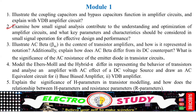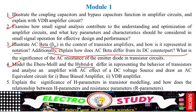Illustrate beta — what is beta AC for the transistor amplifier and how it is represented in notation. Additionally, explain how AC beta differs from its DC counterpart, and what is the significance of AC resistance of the emitter diode in the transistor circuit. This is a lengthy question; you can expect it part by part. Model the Ebers-Moll and hybrid pi models representing the behavior of transistors, and analyze an amplifier with the AC effect of the DC voltage source. Draw the AC equivalent circuit for a base-biased amplifier and VDB amplifier. The hybrid pi model is very important — draw the circuit diagram, equivalent circuit, and provide a simple calculation.